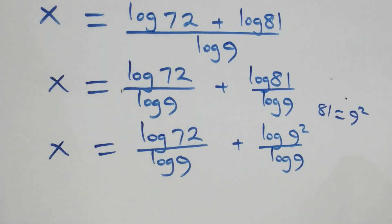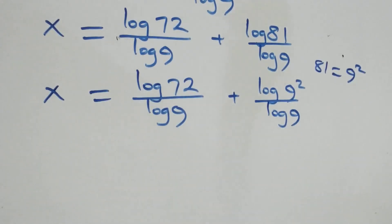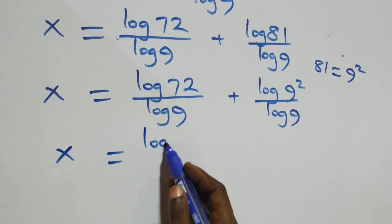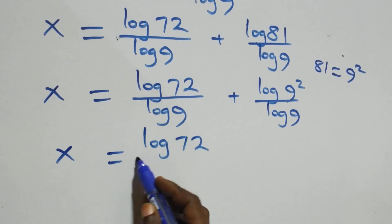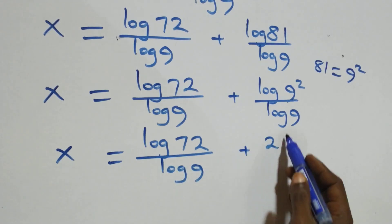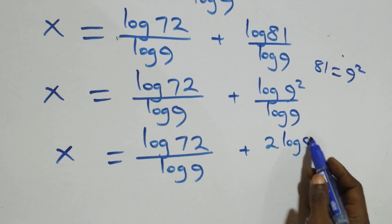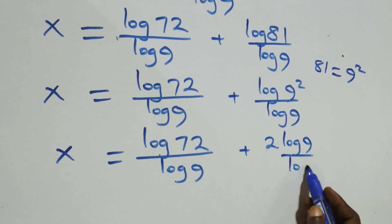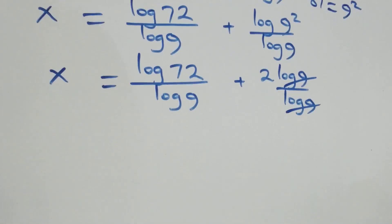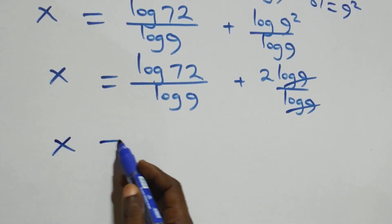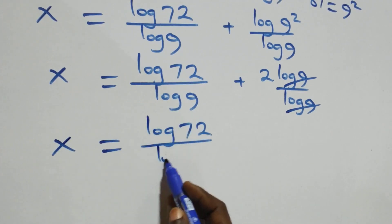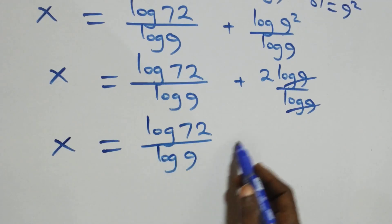We apply the power rule to log 81: since 81 = 9², two comes in, giving 2·log 9 over log 9. The log 9 terms cancel, leaving 2. So x equals log 72 over log 9 plus 2.